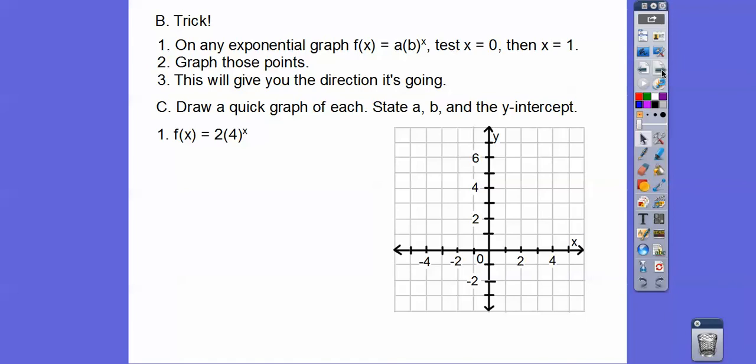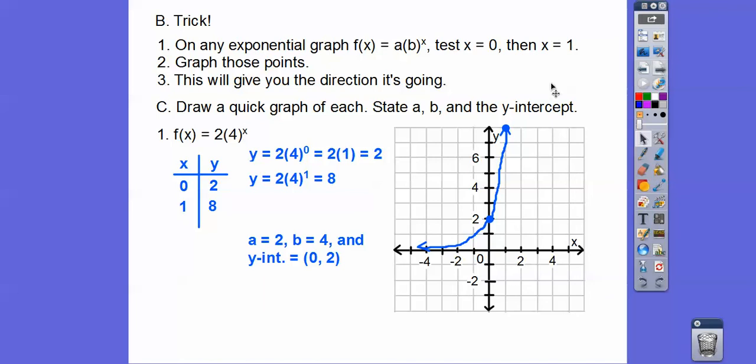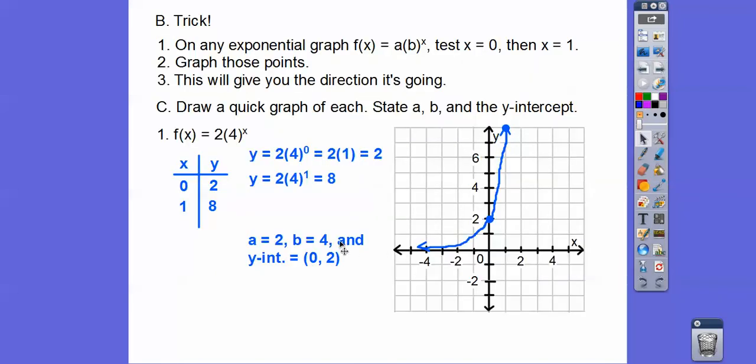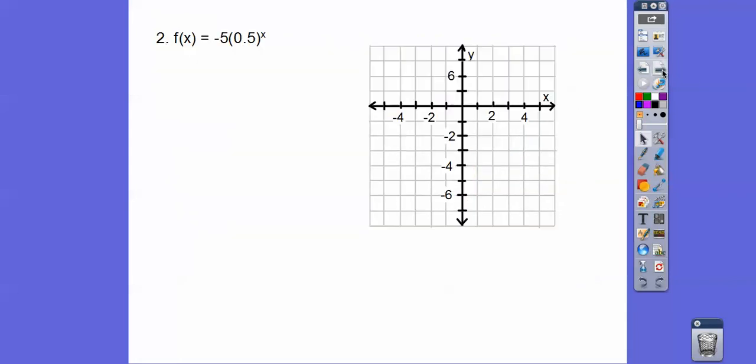Let's draw a quick graph of each. Let's test x equals 0, x equals 1. That's our goal. So plug in 0. 4 to the 0 is 1. 2 times 1 is 2. So we'll graph (0, 2). Then plug in 1. 4 to the 1 is 4. 2 times 4 is 8. So there's (0, 2). There's (1, 8). Your exponential graph is going to flare down like that. There's a, there's b, and the end behavior. As x goes to negative infinity, y goes to 0. As x goes to positive infinity, y goes to positive infinity.